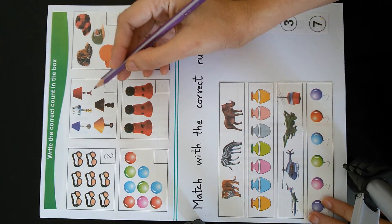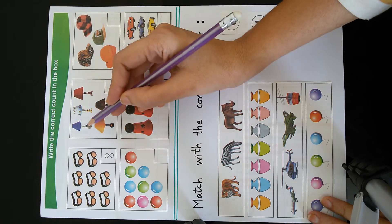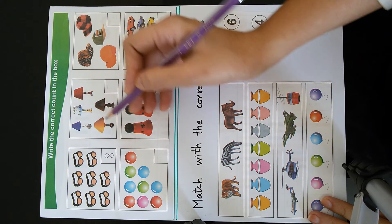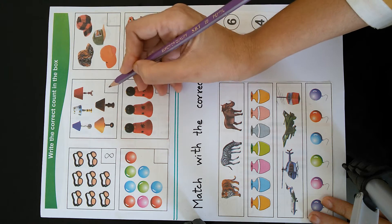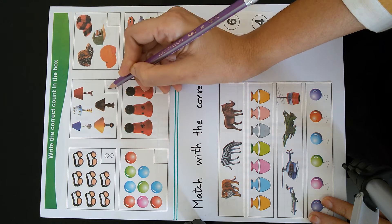The second picture shows lamps. 1, 2, 3, 4, 5. So there are 5 lamps in the picture. So we will write the number 5.